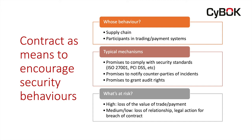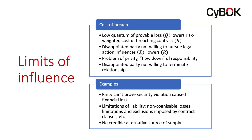What's actually at risk where these contracts are concerned? If a party is going to breach one of these promises, the highest risk might be the loss of the value of a trade or the value of a payment — the case where people are participating in a trading platform or a payment system. In terms of medium or lower risk, what does a party face if they break their word? It might be a loss of relationship, or they could be facing a legal action for breach of contract. But how significant is the influence that those mechanisms are going to have? It may be that breaching a contract doesn't cost very much — this could be because of a low quantum of provable loss, or a disappointed party isn't willing to bring a legal action, or because a party can't prove that a security violation caused a financial loss.